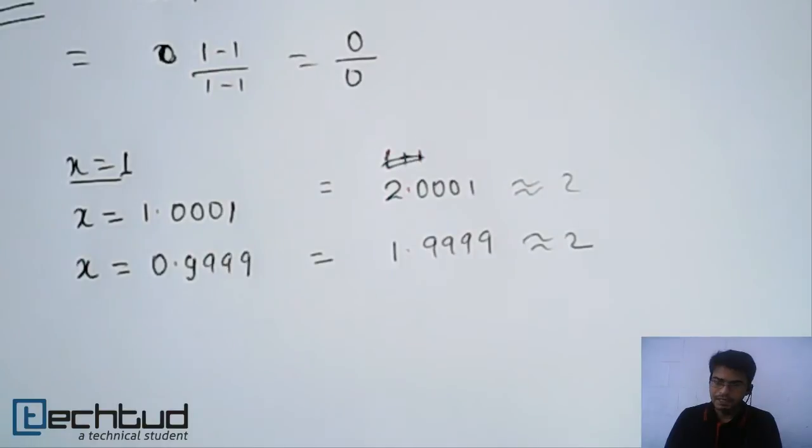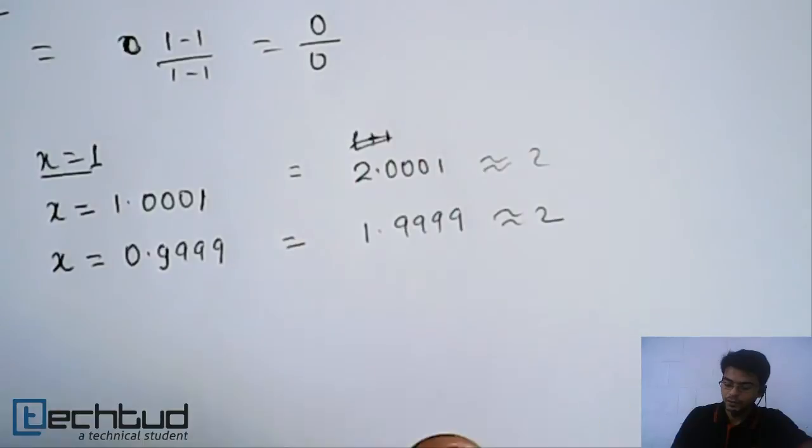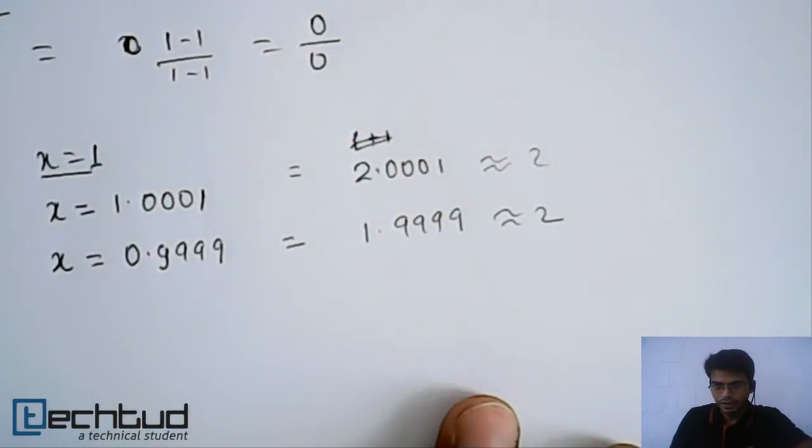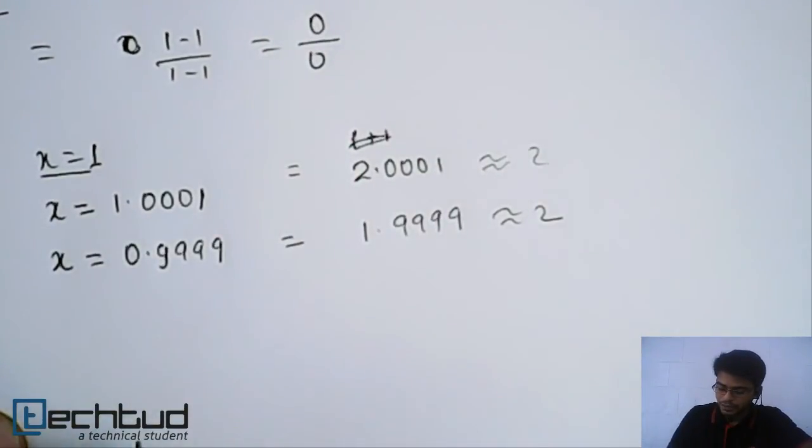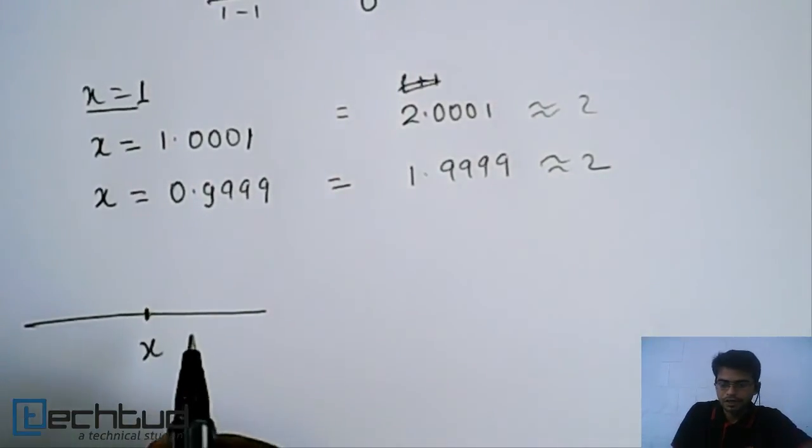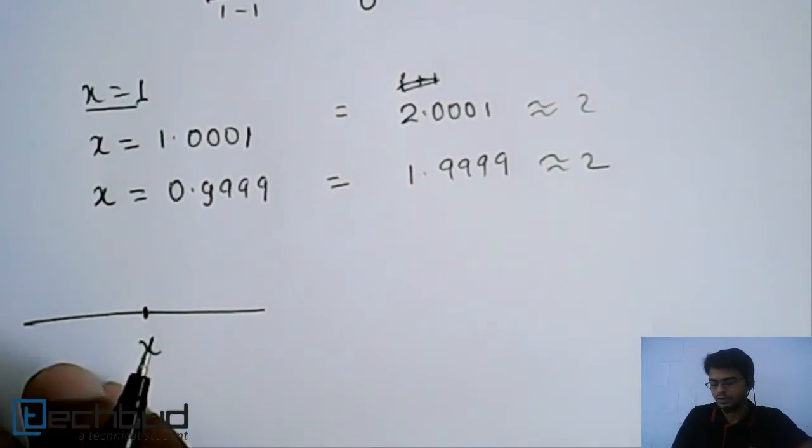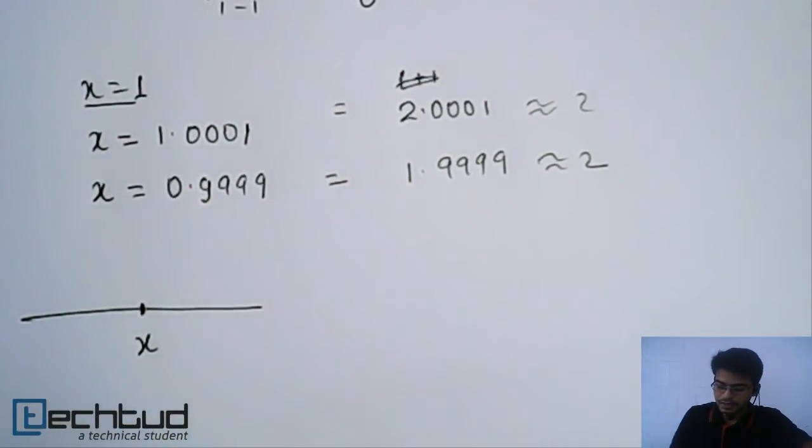So when we say limit, it means we want to say that, okay, I don't know whether at a particular point x, the value of f(x) exist or not. But what is the value of this around this point, neighborhood of this point? So that is the concept of limit.